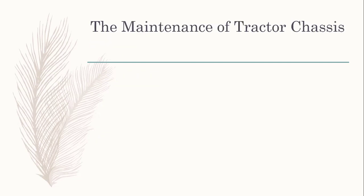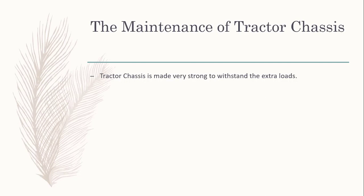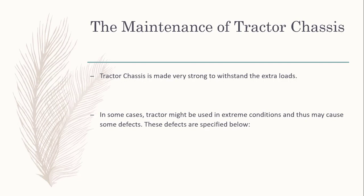Maintenance of the tractor chassis is very important because it is the only thing that carries the load. Its design and testing must be very rigorous — if it fails testing, it cannot survive in the field. The tractor chassis frame is made very strong to withstand extra loads, and a factor of safety of three to four times is used in the design. In some cases the tractor might be used in extreme conditions, which may cause defects. The first defect is loose rivets — the rivets connect the engine, gearbox, and other attachments to the chassis, and they may loosen or break due to usage.